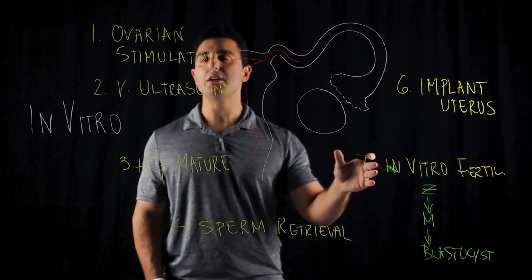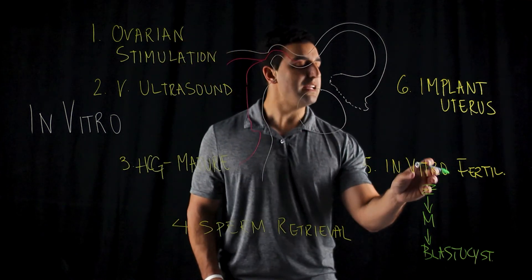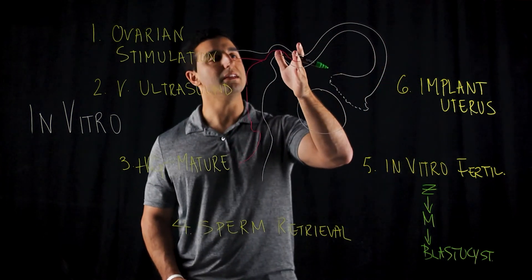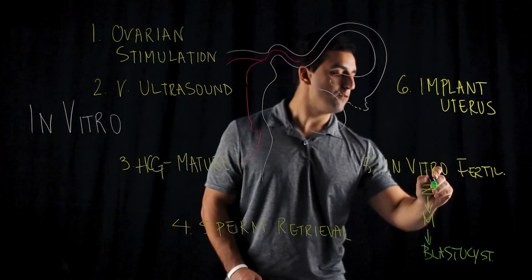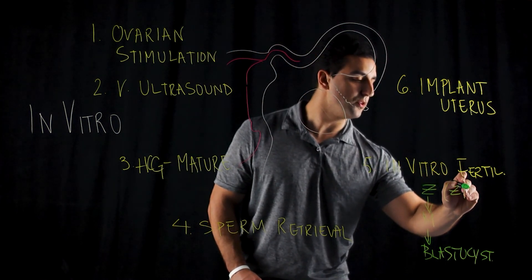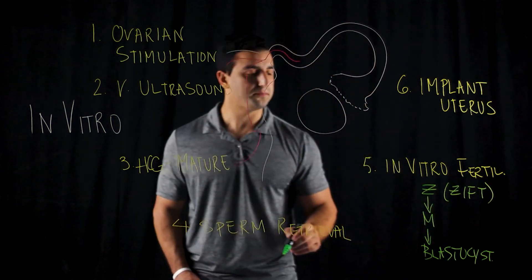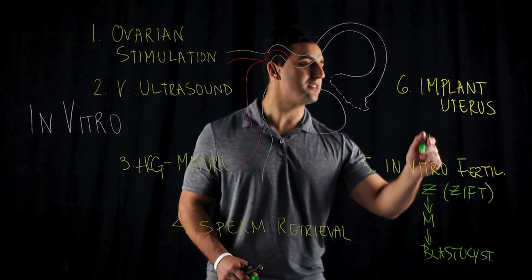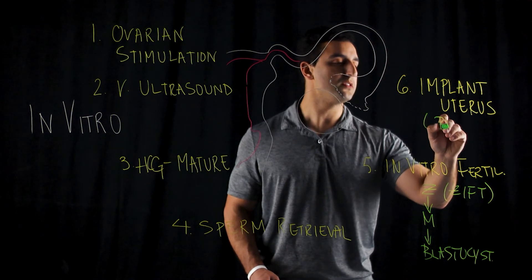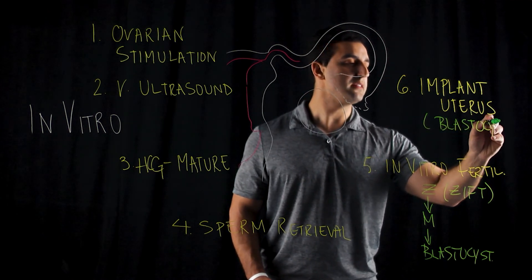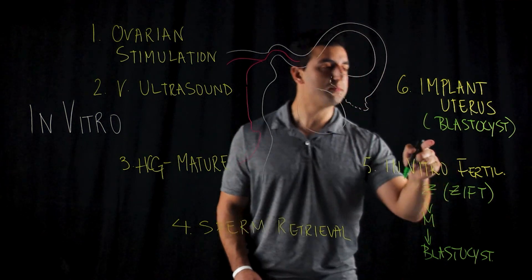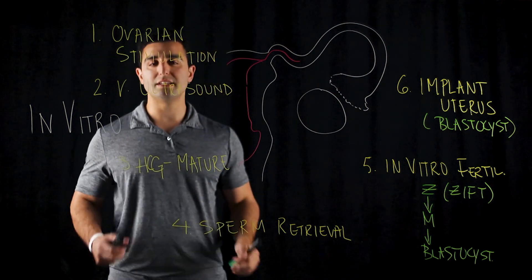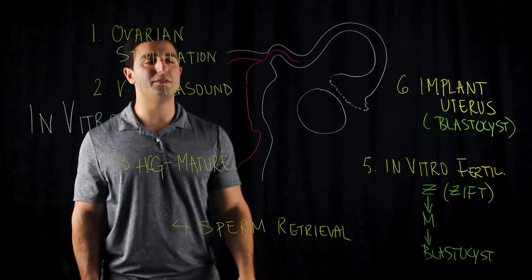Other technologies may keep the zygote and insert it into the fallopian tube rather than the uterus — an example of this is ZIFT, zygote intra-fallopian transfer. Ultimately, the blastocyst is implanted into the uterus to allow for the process of embryogenesis to take place. This is a basic overview of how in vitro fertilization works.